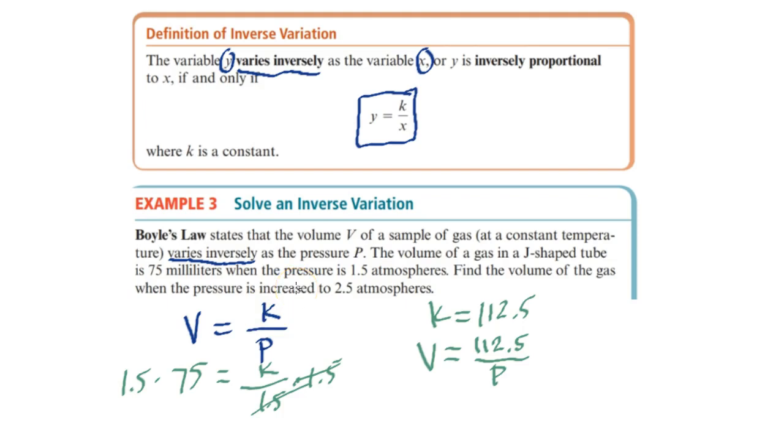Now we can solve the question. Find the volume of the gas when the pressure is increased to 2.5 atmospheres. So we want to solve for volume v, and we have 2.5 pressure p. So 112.5 divided by 2.5.